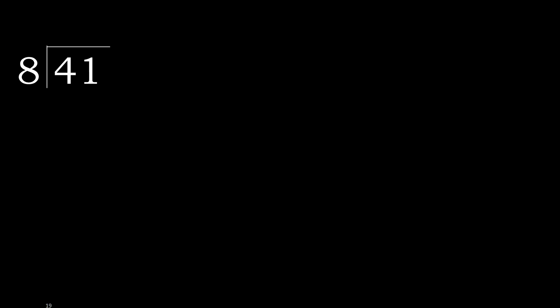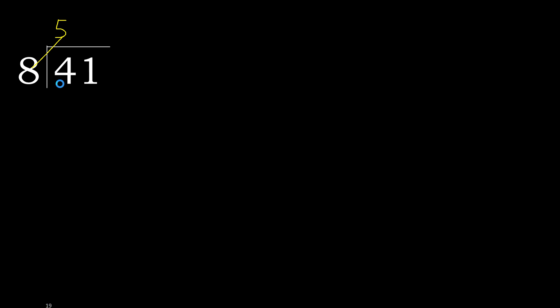41 divided by 8. 4 is less, therefore next. 41 is not less, therefore with 41: 8 multiplied by which number is nearest to 41 but not greater? 8 multiplied by 6 is greater. 8 multiplied by 5 — 40 is not greater. Subtract 1, next.